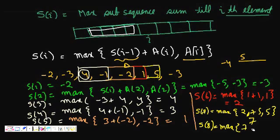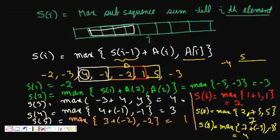S(8) = max(S(7) + A(8), A(8)) = max(7 + (-3), -3) = max(4, -3) = 4. Now we've calculated the maximum subsequence sum ending at every element. Iterating through all values: S(1)=-2, S(2)=-3, S(3)=4, S(4)=3, S(5)=1, S(6)=2, S(7)=7, S(8)=4 — the maximum is S(7) = 7, formed by the window {4, -1, -2, 1, 5}.